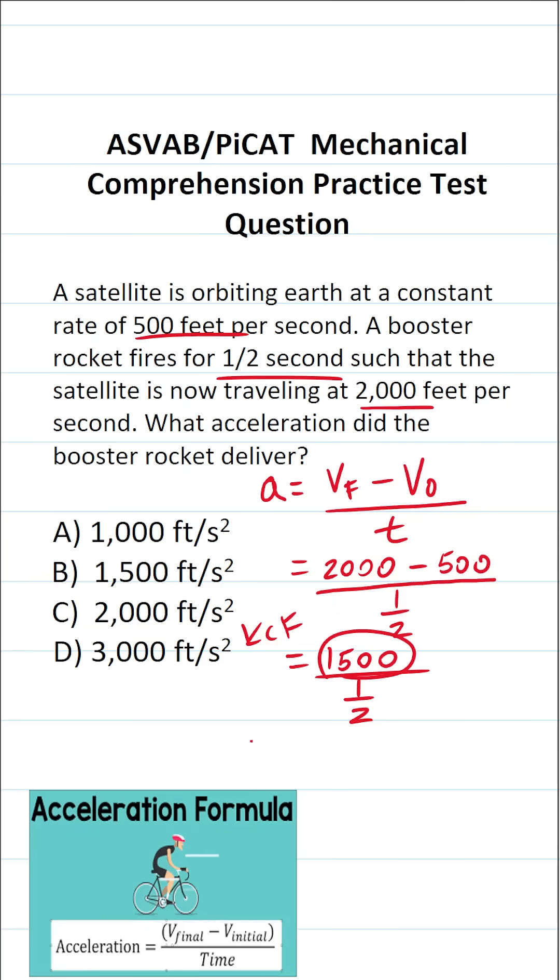So we're going to keep 1,500 the same. We're going to change from division to multiplication. And then we're going to flip this bottom fraction. So instead of being 1 over 2, it's going to be 2 over 1. What is 2 over 1? 2 divided by 1 is just 2.